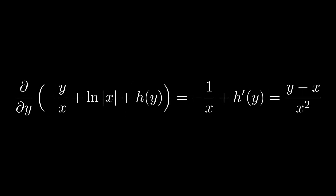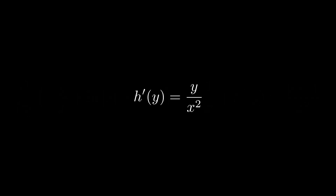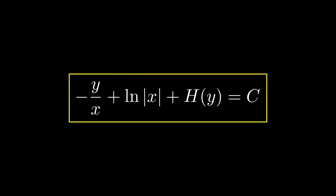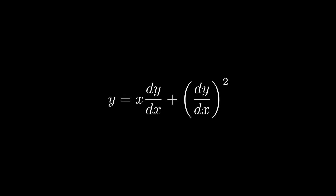Taking the partial derivative of our result with respect to y gives −1/x + h'(y). Since h'(y) equals y/x² in this case, we cannot explicitly solve for h(y) using elementary methods — it's very difficult to solve.